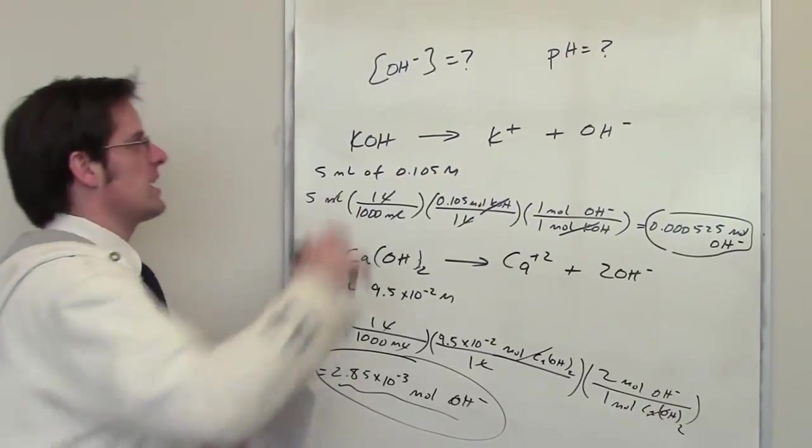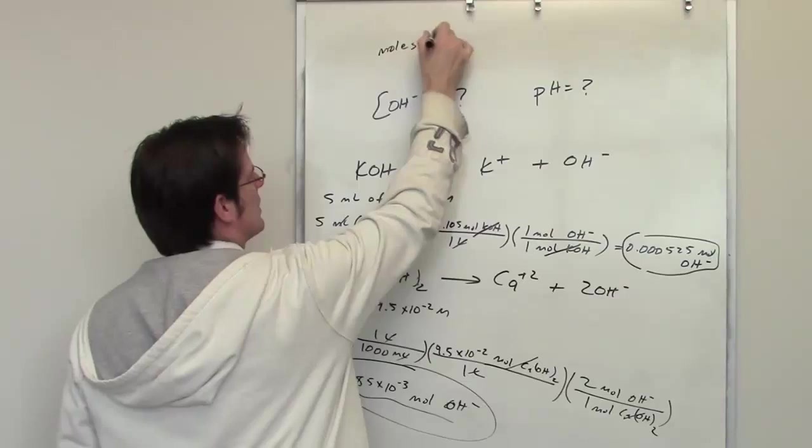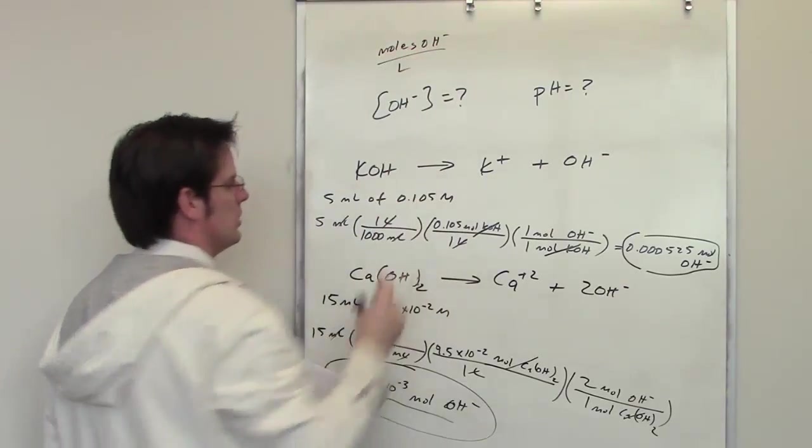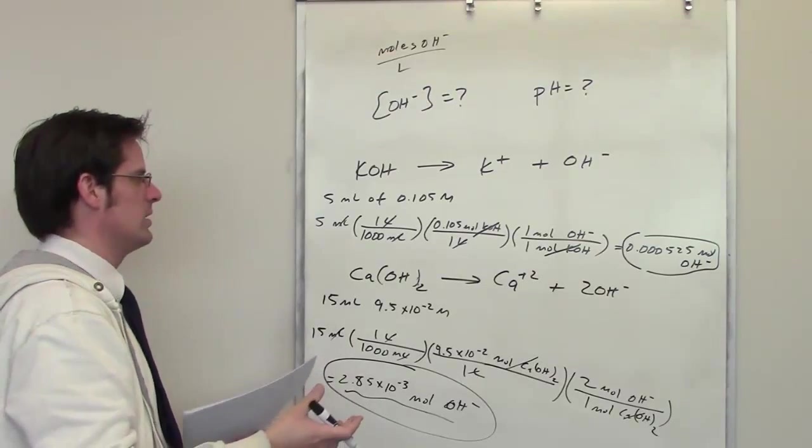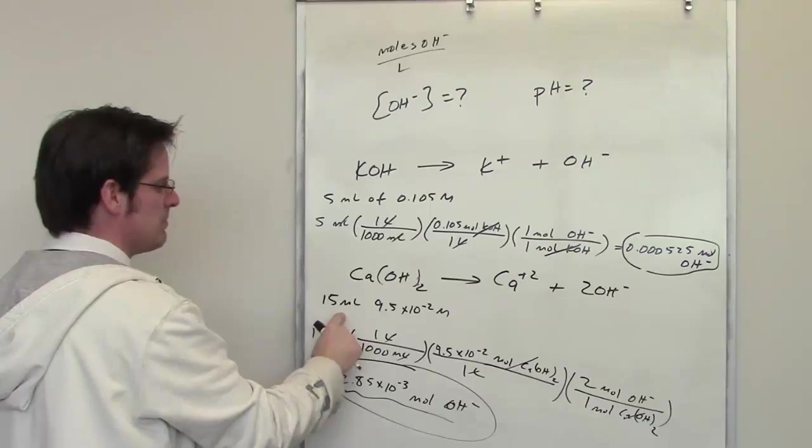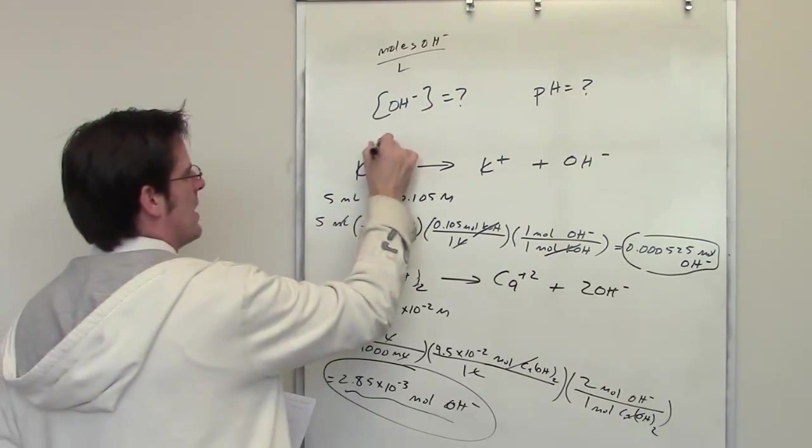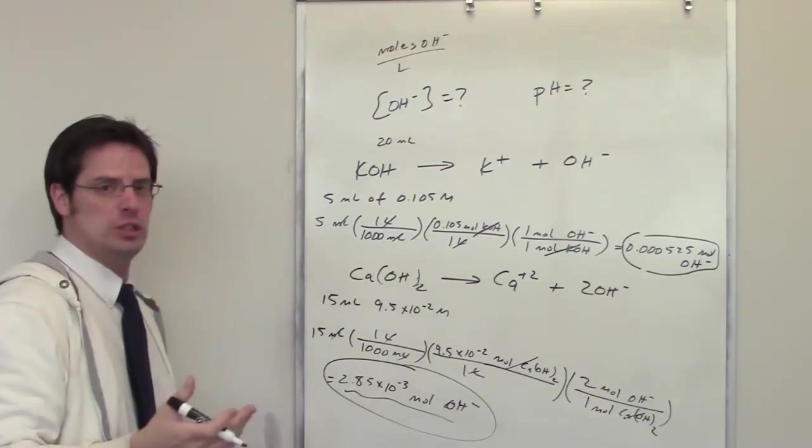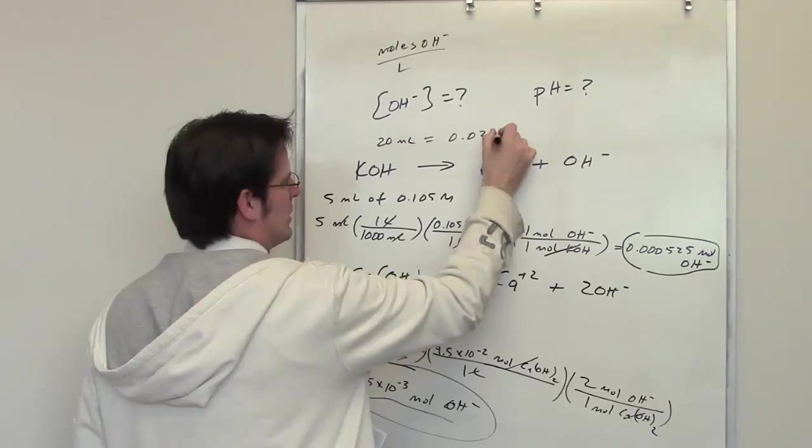Keep in mind now that I want to get the concentration of hydroxide. The concentration is in moles of hydroxide divided by total liters of solution. How many liters of solution have I thrown together here? I've got 5 milliliters from this stuff and I've got 15 milliliters of that stuff. So I add those two together, that's 20 milliliters total of solution. How many liters is that? If you're okay with me jumping the gun here, that's 0.02 liters.